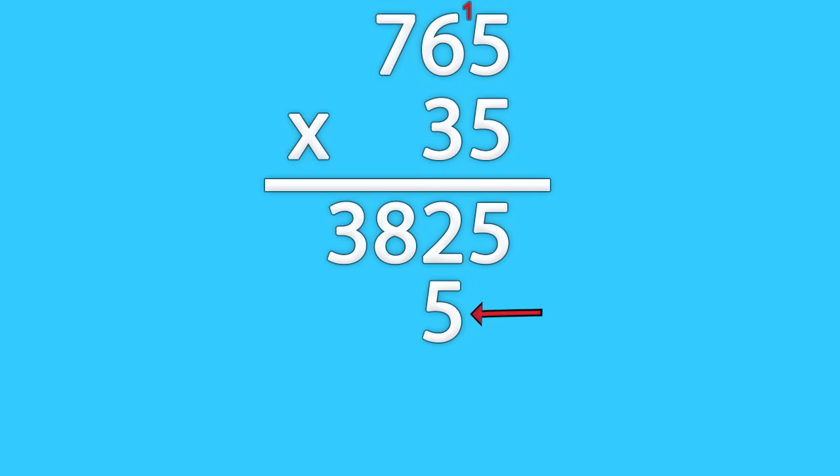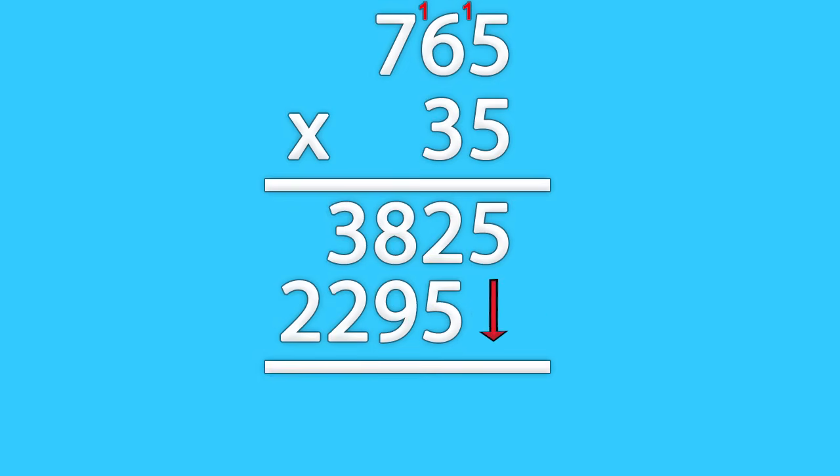Carry the one. Carry this one. Then write the full number. Lastly, you add the two numbers, and you have your result. 26,775.